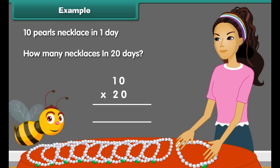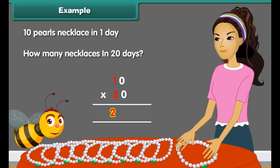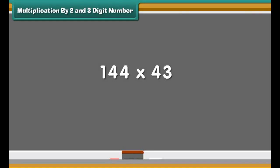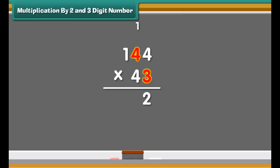We get the table of 15. Dinah makes 10 pearl necklaces in one day. In 20 days, she will make how many necklaces? We need to multiply 10 with 20. Step 1: multiply the numerals without zeros — 2 multiplied by 1 is equal to 2. Step 2: count and add the number of zeros to the right side of the answer. In this case, we have two zeros, so the final answer becomes 200.